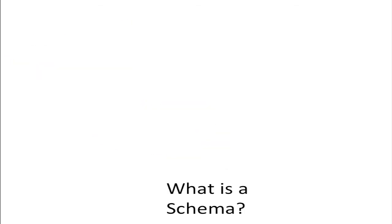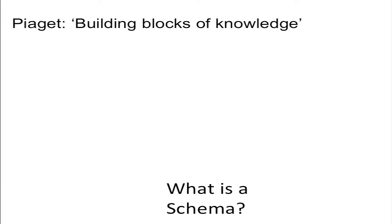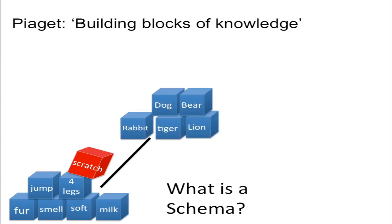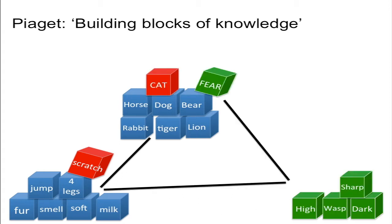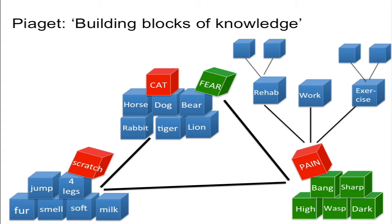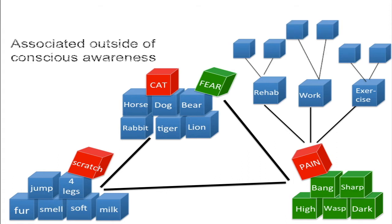Let's take a moment to look at how we got here. The developmental psychologist Piaget said that a schema is the basic building block of knowledge. Things that have been learned become associated into groups by their characteristics and then organised into categories — for example, animals. Another characteristic, maybe fear, could apply to another category, such as pain. And all of this overlapping information provides us with layers of knowledge that can be accessed very quickly, but outside of conscious awareness.